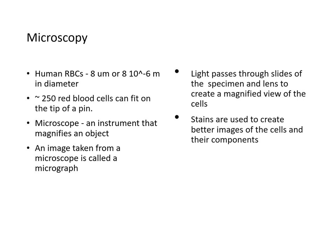Briefly about some information on microscopy. Human red blood cells are about 8 micrometers in size — or 8 times 10 to the negative 6th meter in diameter. About 250 blood cells can fit on the tip of a pen. A microscope is an instrument that magnifies objects, and an image from a microscope is called a micrograph. Typically, light passes through slides of the specimen and lens to create a magnified view of cells. Stains are used to create better images of the cells and their components.